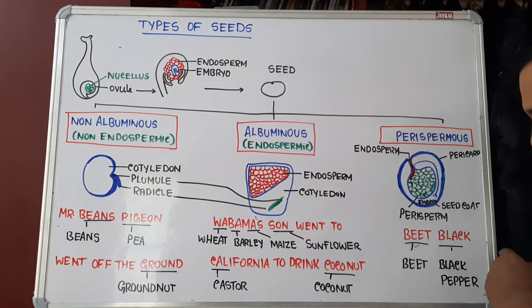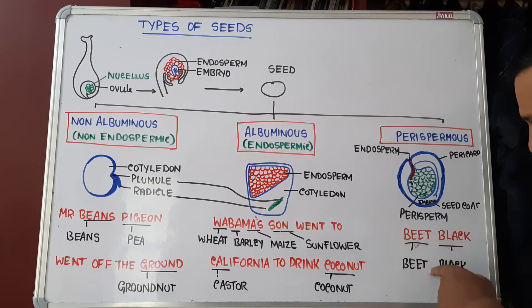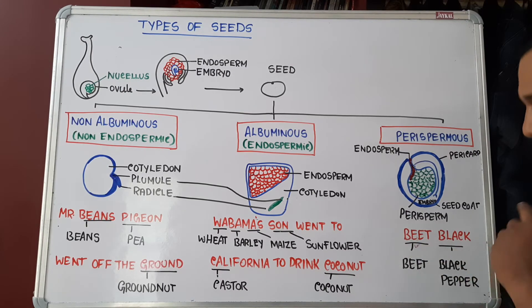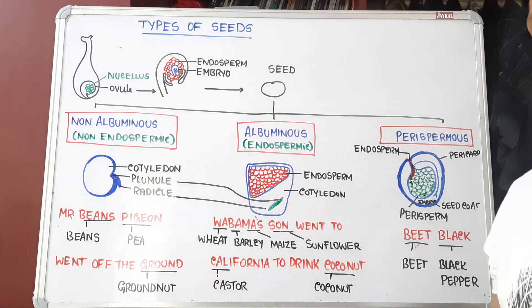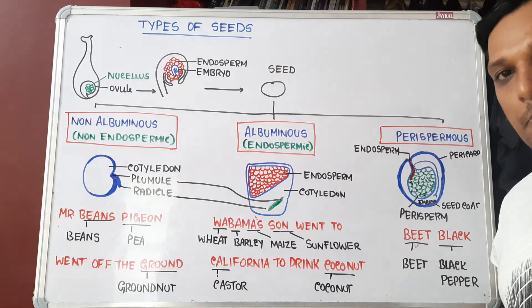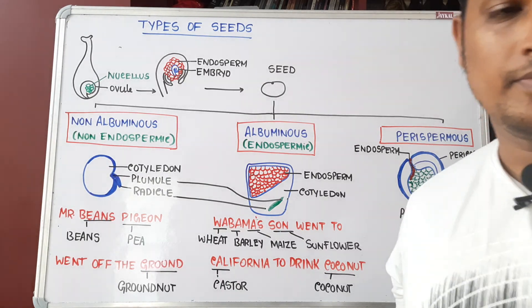Examples of perispermous seeds are beet and black pepper. These are the three types of seeds found in plants. Thank you for watching.